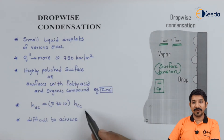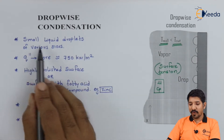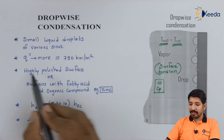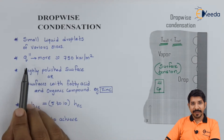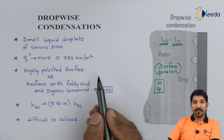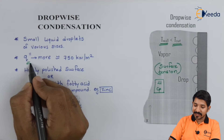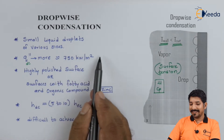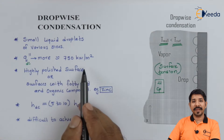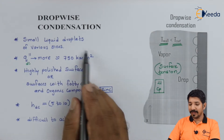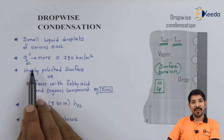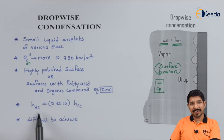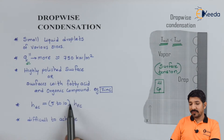These are some of the salient features of drop-wise condensation. Small liquid droplets of various size and shape will be formed, and the size and shape depend on these parameters. The heat transfer rate or heat flux is more compared to film-wise condensation — approximately 0.75 megawatt per meter square (750 kilowatt per meter square) more. The heat transfer coefficient in drop-wise condensation is 5 to 10 times more than that of film condensation.